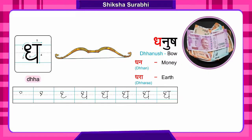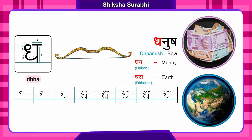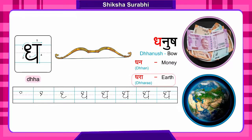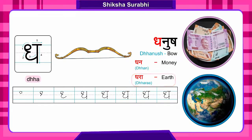Dha say Dhanush. Dhanush means the earth. What is the earth? It is a ball-like round thing. You must have seen it in pictures. The earth is the one on which we are living. It is going around the sun. You all know that it is the earth. Dha say Dhanush.